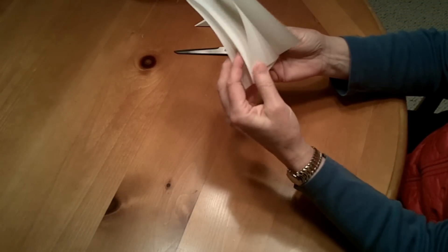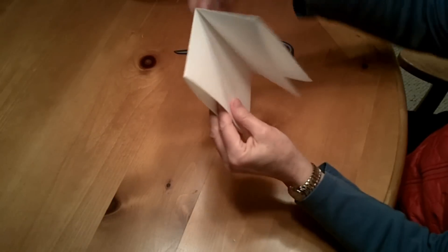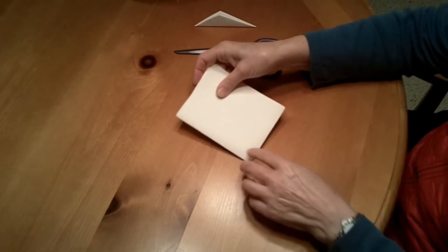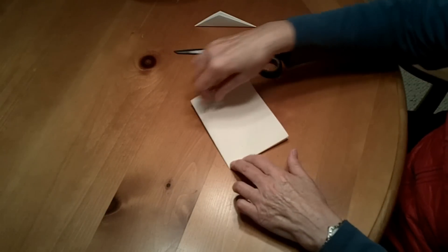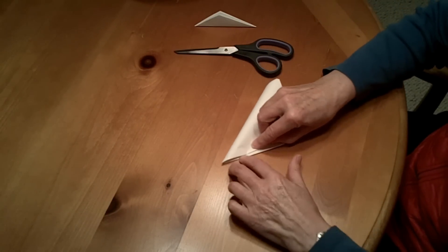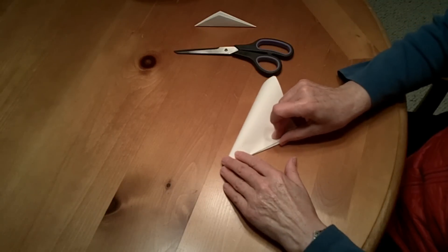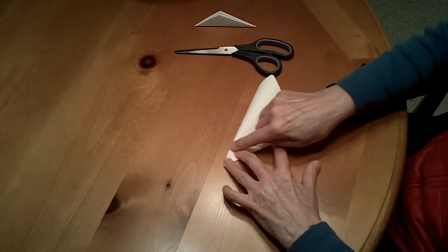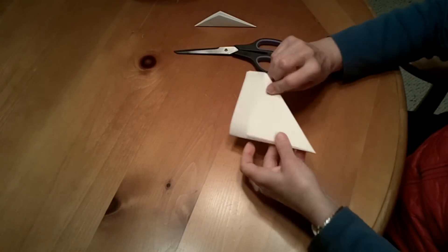As you can see, this is the outside of the paper. This is the center of the paper. From the center of the paper here, which will be the center of the snowflake, you'll take it and simply fold it over until you have this shape.